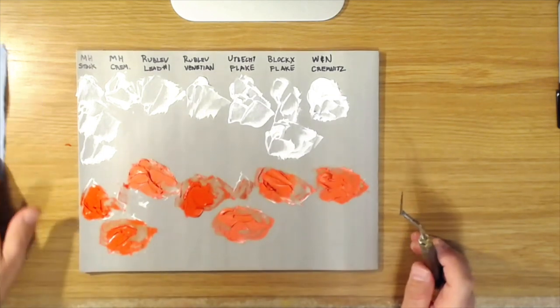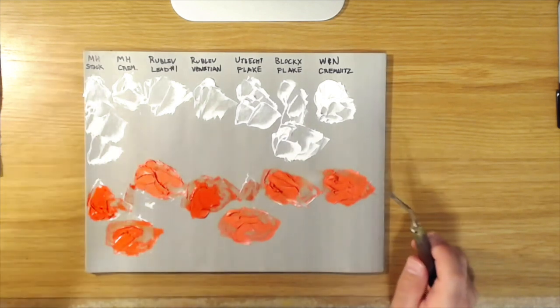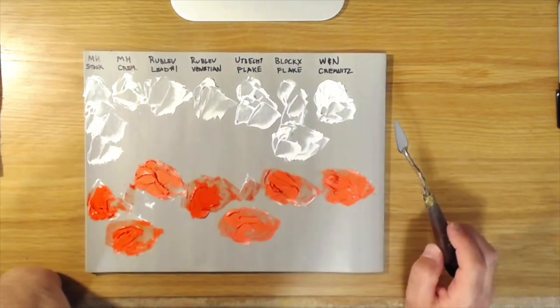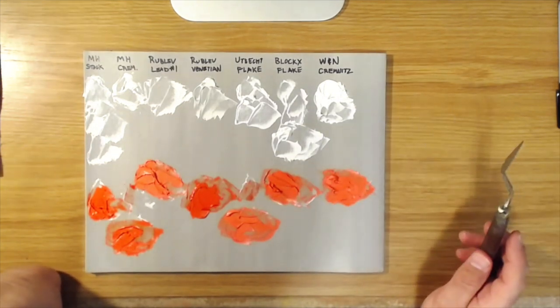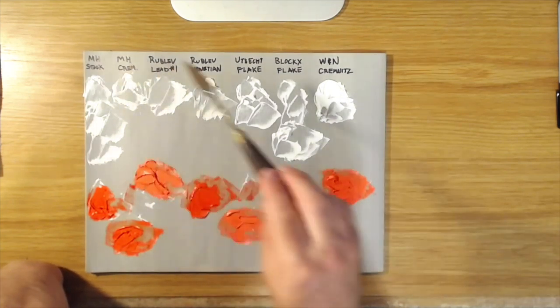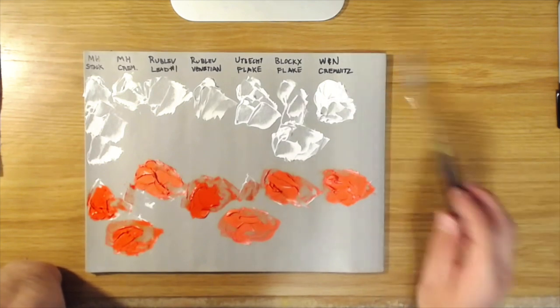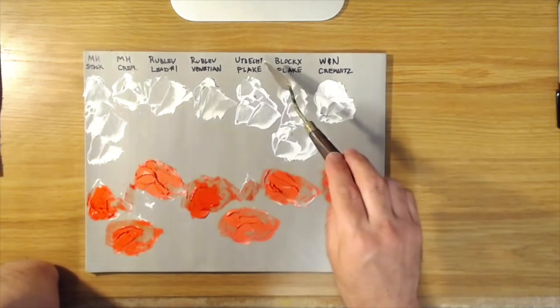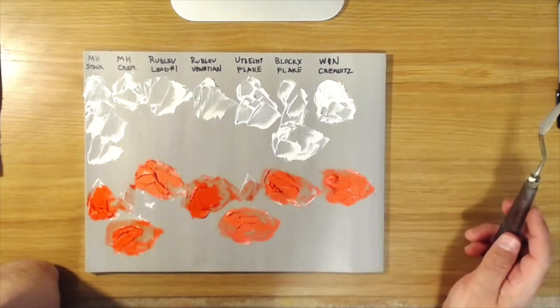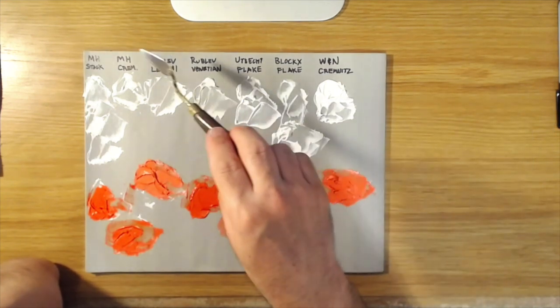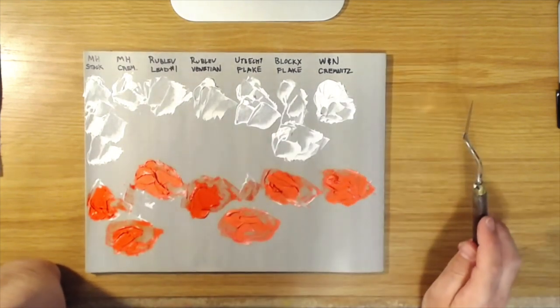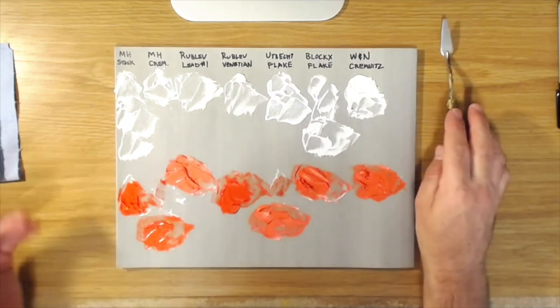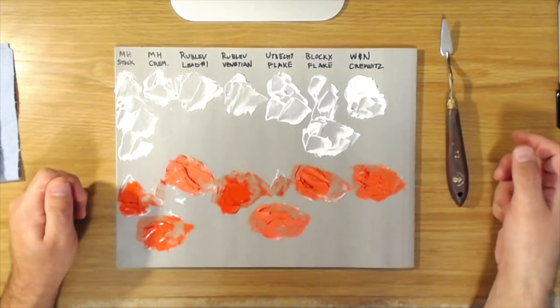Personally, my favorite out of all of them is the Rublev Lead White Number One, but the Blocks Flake White is also pretty nice, I like that one a lot too. But these are all good quality paints, so you can't really go wrong with any of them. It's just that some, like the Michael Harding stack lead white and the Rublev lights, will be more expensive than like the Windsor Newton or the Utrecht. So if you're just starting out, you've never used a flake white before and you want to try it, I'd recommend either the Utrecht or the Windsor Newton Kremnitz. But if you want to dive in and spend the money, then go with the Rublev or the Michael Harding, one of the Michael Harding lead whites, and you can't go wrong with those. I hope that you found this video useful and informative and it will help you make decisions the next time you go to buy lead white.